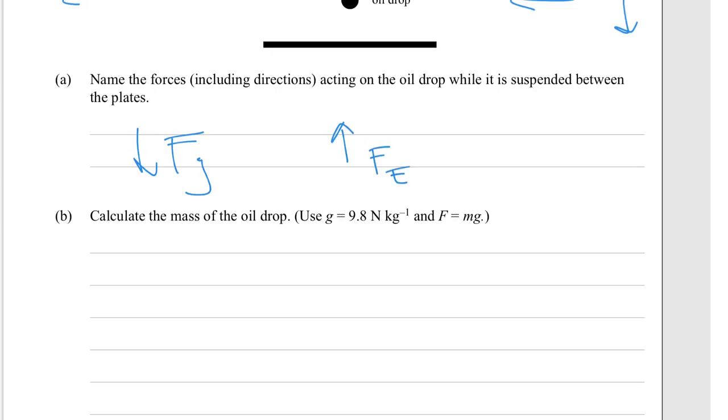Part B: Calculate the mass of the oil drop. Use g = 9.8 m/s² and F = mg. So the idea is we've got a force due to the electric field which should be equal and opposite to the force due to gravity.